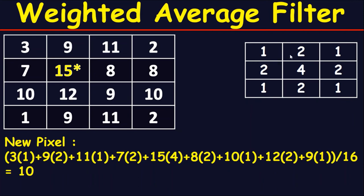Divide the result by the sum of the three by three matrix: one plus two plus one plus two plus four plus two plus one plus two plus one equals sixteen. Dividing gives 10.3, and taking only the integer part, the final answer is 10.